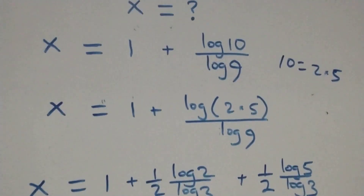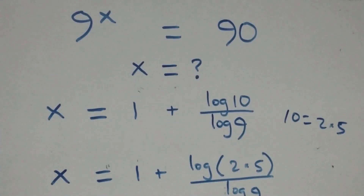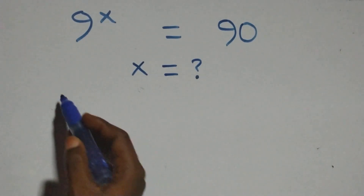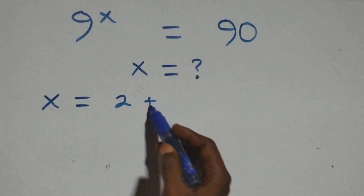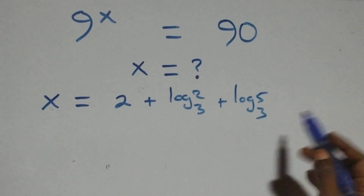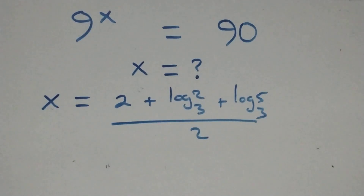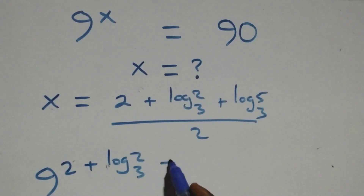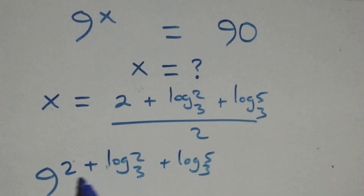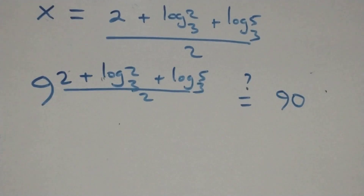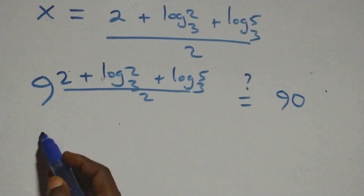The value of x is (2 plus log 2 base 3 plus log 5 base 3) all over 2. Let's check here if this satisfies the given problem — we substitute the value of x, which gives 9 raised to the power (2 plus log 2 base 3 plus log 5 base 3) all over 2, and this should equal 90. From here, 9 can be written as 3 squared.